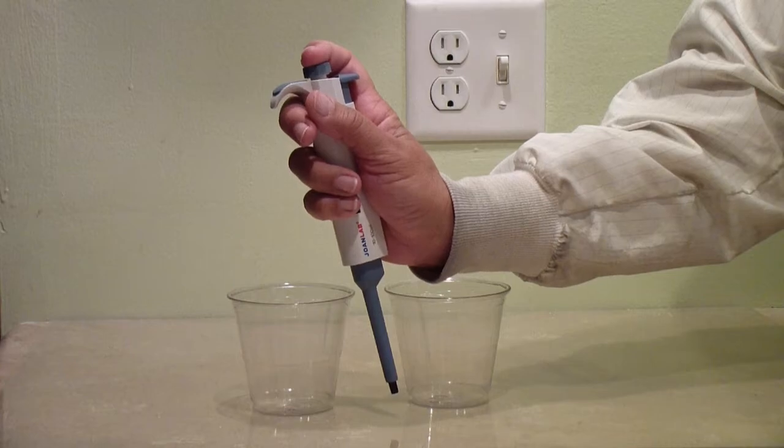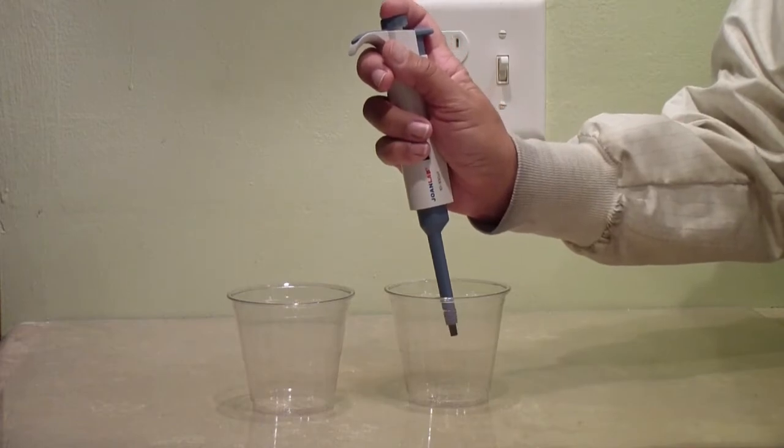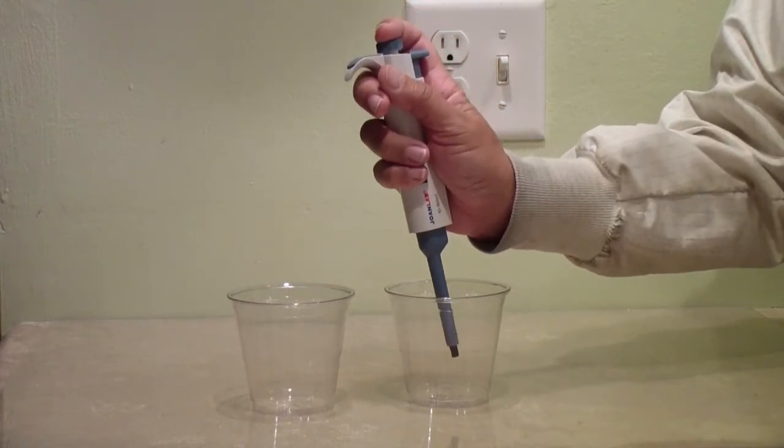Stick the imaginary tip into your imaginary liquid. You only put the tippy end of the tip in the liquid. If you put the tip in too deep, you risk getting water near the top of the tip, which can damage the pipette.